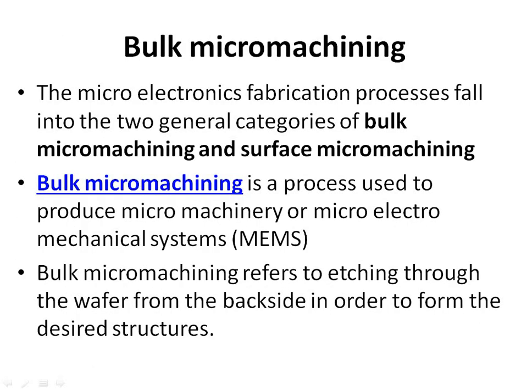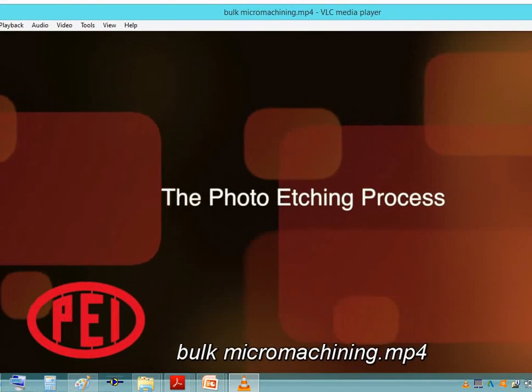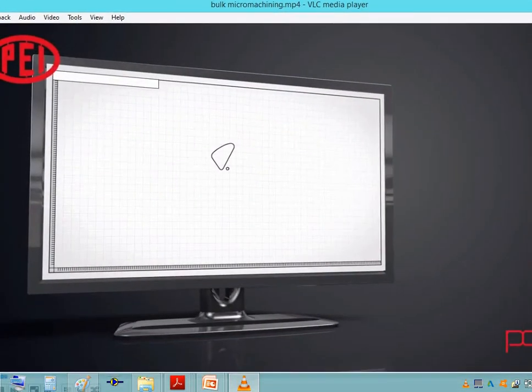Bulk micromachining: The microelectronics fabrication processes fall into two general categories — bulk micromachining and surface micromachining. Bulk micromachining is a process used to produce micromachinery or microelectromechanical systems (MEMS). It refers to etching through the wafer from the backside in order to form the desired structures.